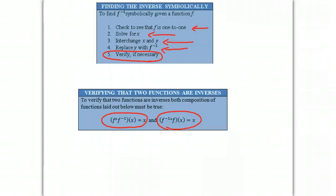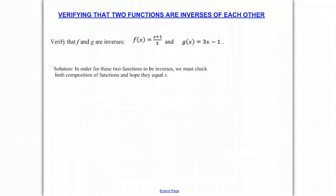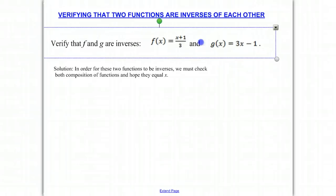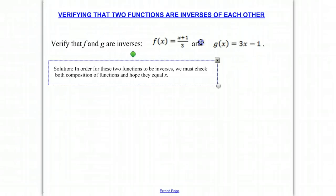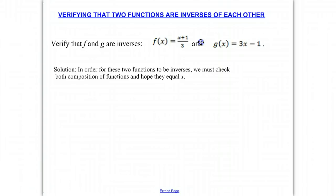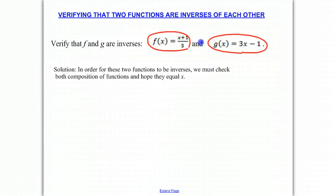So let's do a problem. We're going to verify that function f and g are inverses. Our original function is f of x equals x plus 1 over 3, and we're going to verify that this f of x and g of x are actually inverses of each other.